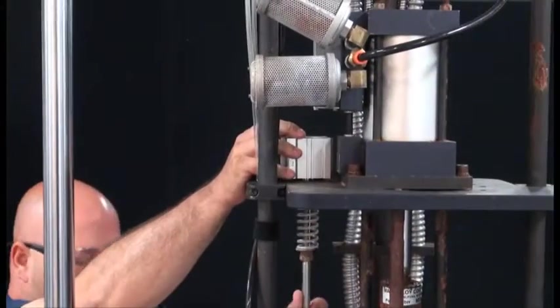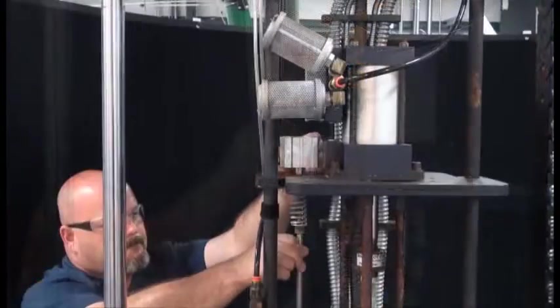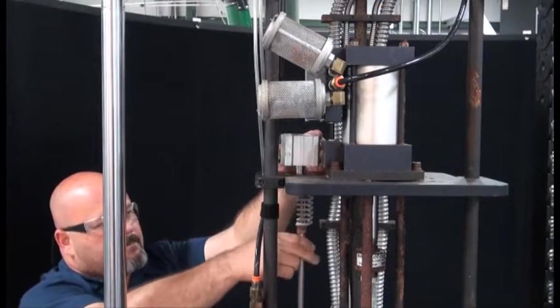Unscrew the purge stem from the actuating cylinder. The use of a wrench on the purge stem may be required.